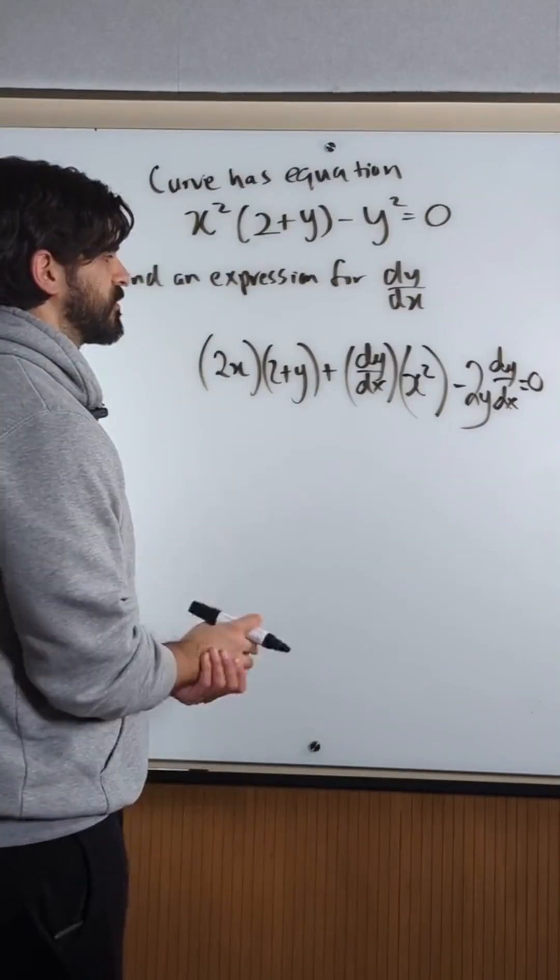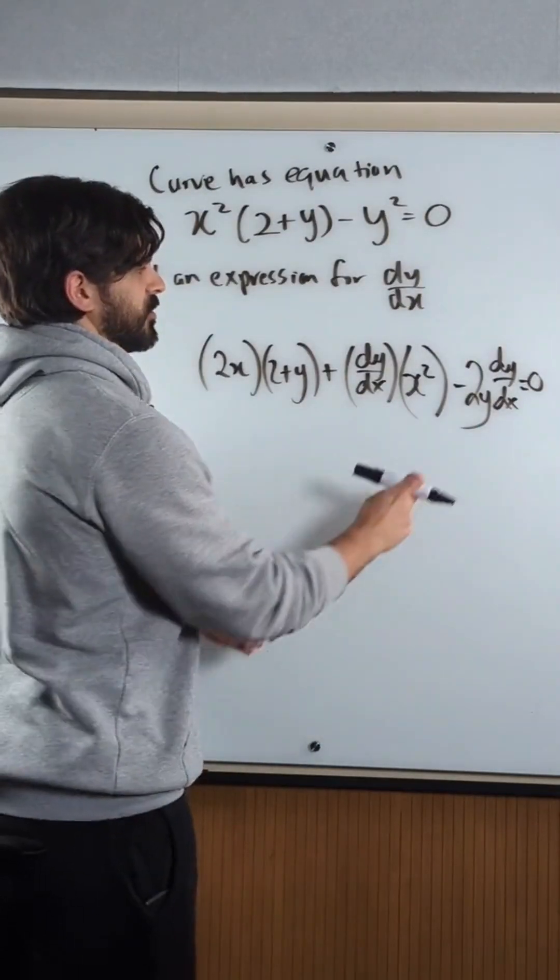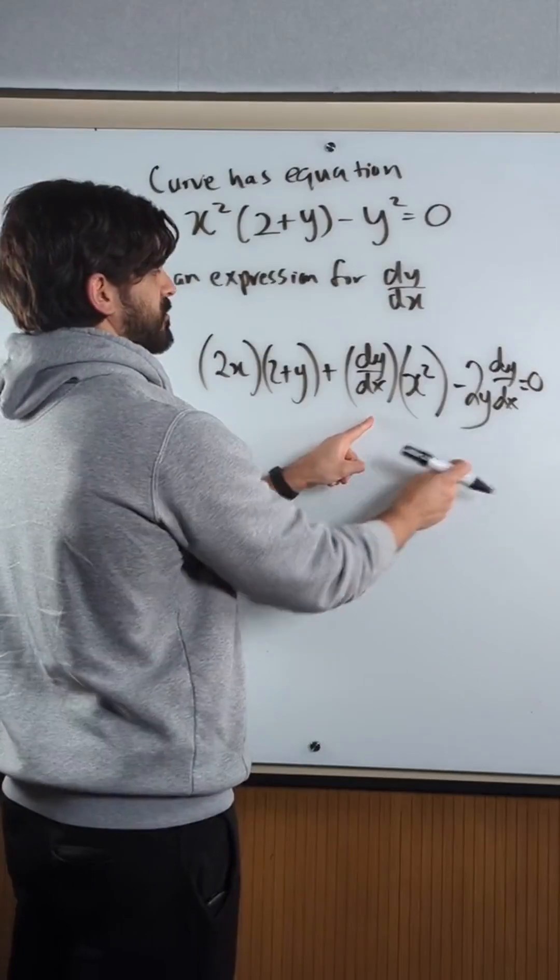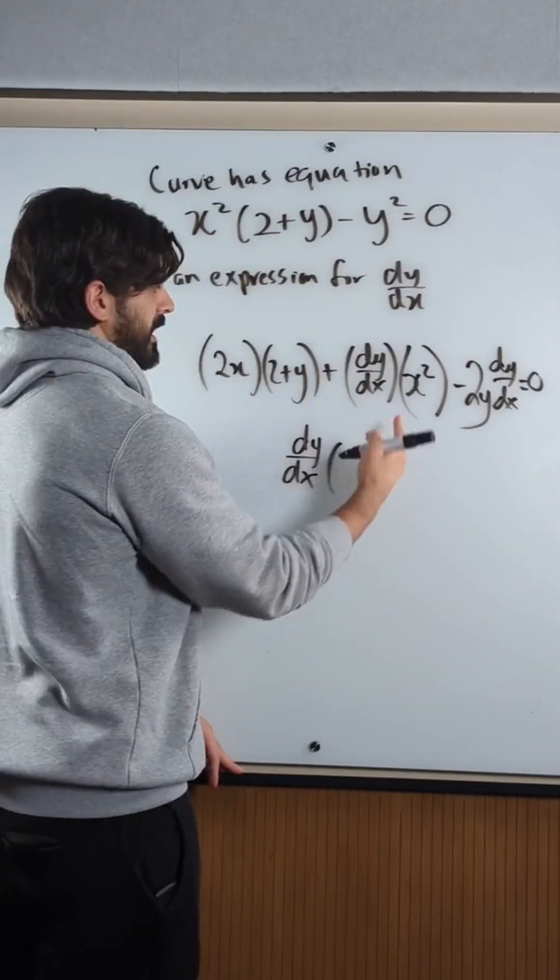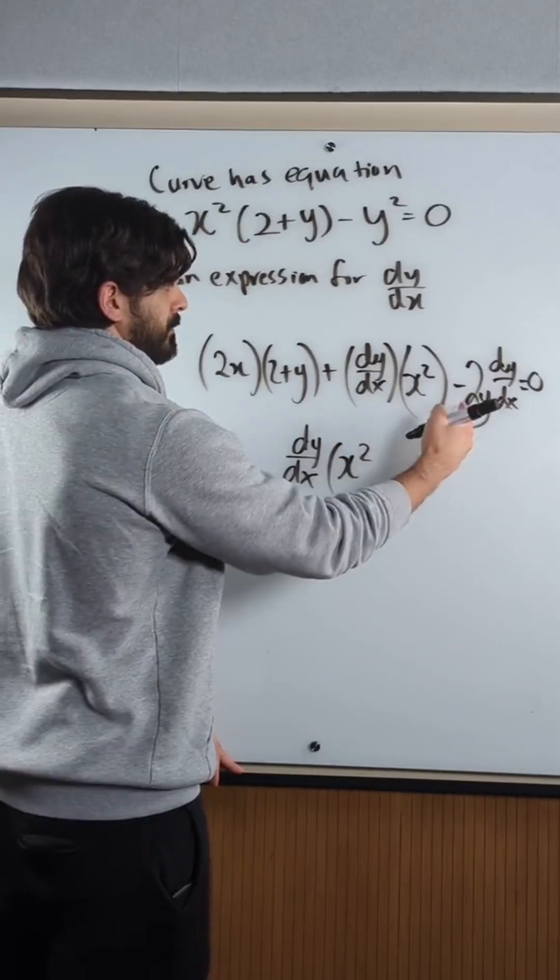Okay, now all we need to do is rearrange for dy/dx. What I'm going to do here is factorize out dy/dx. What am I left with? x² minus 2y.